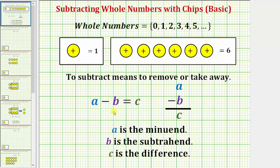We read both of the subtraction problems A minus B equals C, where A, the quantity we begin with, is called the minuend. B, the quantity we're subtracting from A, is called the subtrahend. And C, the result of subtracting B from A, is called the difference.